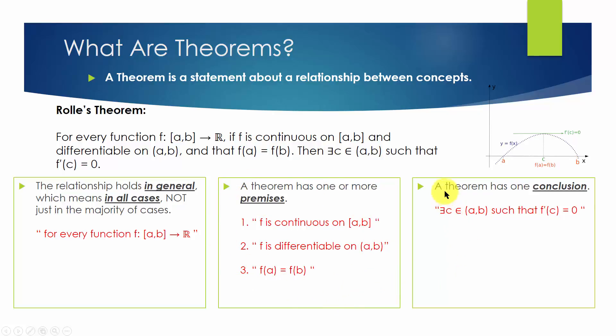A theorem has one conclusion. It says, then there is a point c between a and b, such that the derivative of function f at this point c is 0. It doesn't tell us exactly where c is. It just says that c must exist.